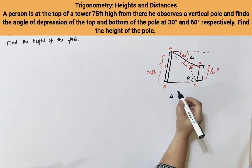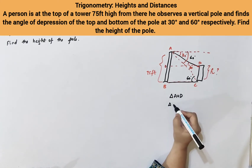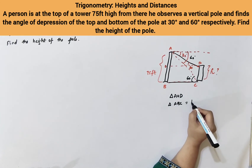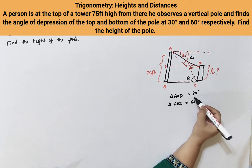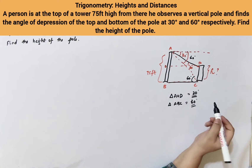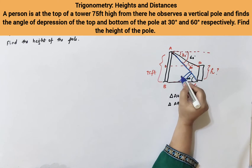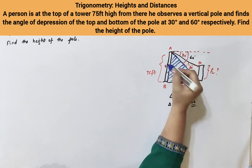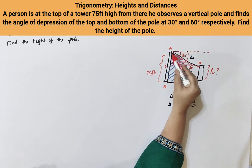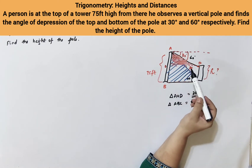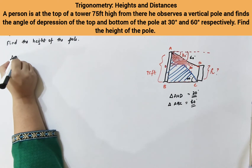If you observe, there are two triangles here. One triangle is AOD and the other triangle is ABC. Triangle AOD has a 60 degree angle and triangle ABC has a 30 degree angle. For identification, let me color code these triangles. First, let's take triangle ABC.